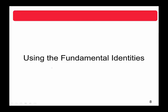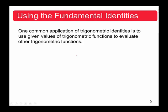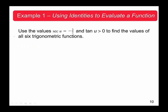Now let's start using the fundamental identities. One common application is to use a given value of a trigonometric function to evaluate the other five. For example: given secant u equals negative 3/2 and tangent u is greater than zero. Remember, when tangent u is greater than zero, angle u is located either in the first quadrant or the third quadrant.